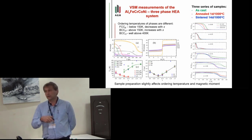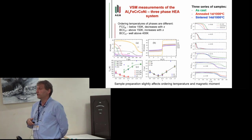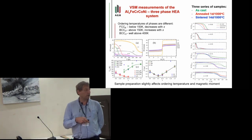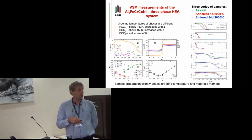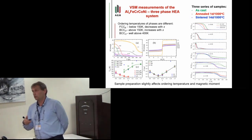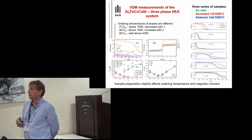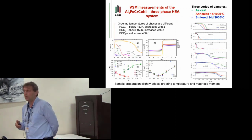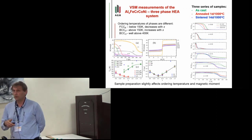What is interesting is that the magnetic moment of the samples first decreases up to x equal 0.5, where it has the lowest value, and then it starts to increase. We have explained this fact in terms of the multi-phase character of the samples and different magnetic properties of particular phases.